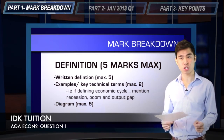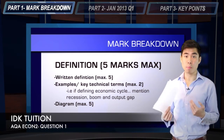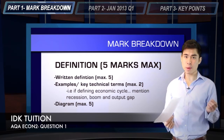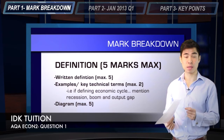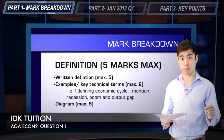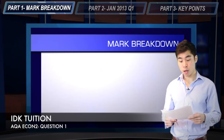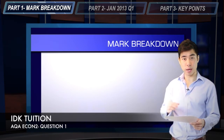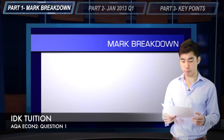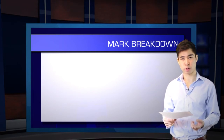Depending on the question, you might actually be able to pick up all five marks from your diagram alone. So for something quite technical like the output gap, it's actually better to explain what the output gap is diagrammatically rather than through a written definition. In this case, you could pick up all five marks from drawing a fully annotated and fully explained diagram illustrating the output gap. But generally speaking, for your diagram there's going to be a maximum of two marks available.